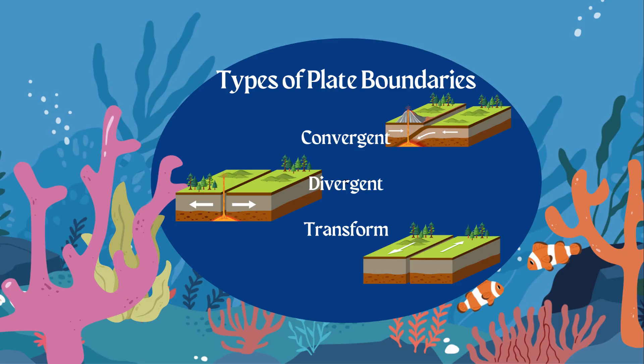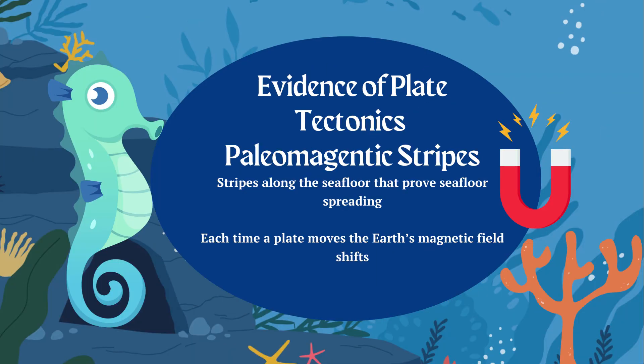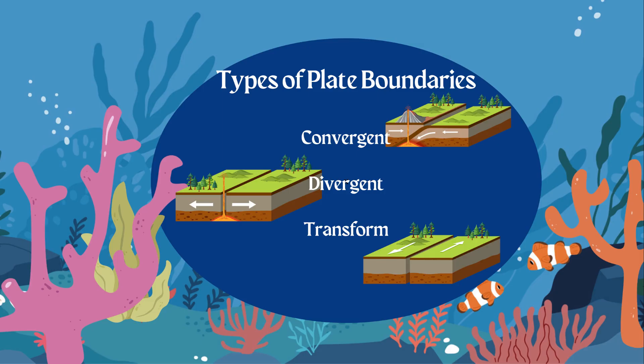Then we have plate boundaries: convergent, divergent, and transform boundaries. These boundaries allow for those paleomagnetic stripes to form. Every time a plate shifts in a certain direction — whether convergent, divergent, or transform — it shifts the magnetism on earth, and we can actually see this striping on the bottom of the seafloor.